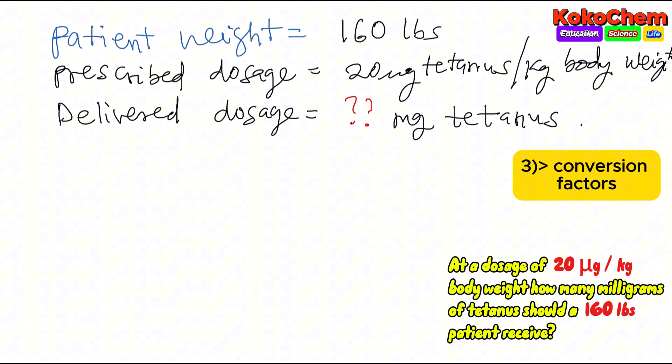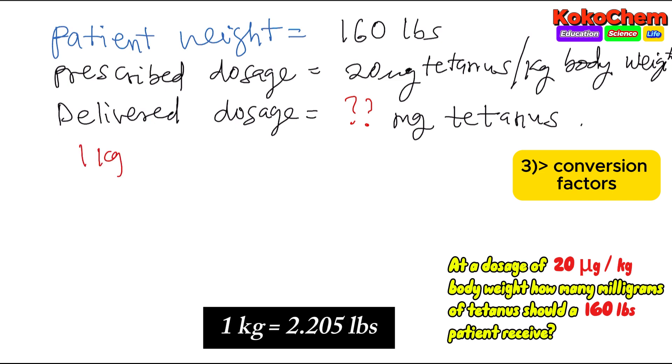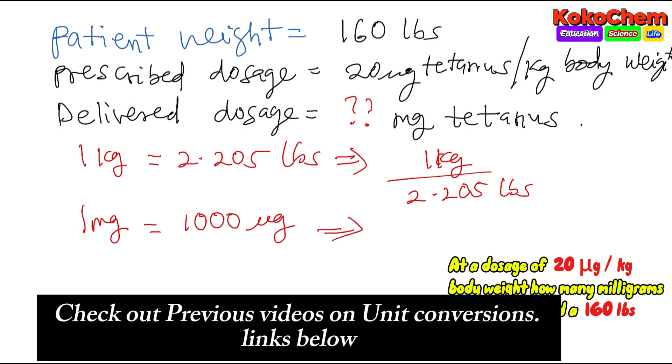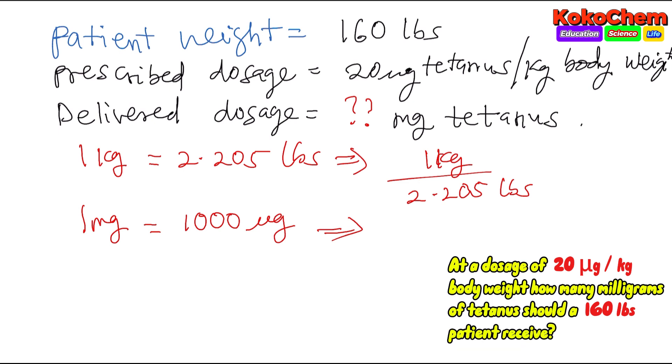Step three: identify your conversion factors. One kilogram equals 2.205 pounds. One milligram equals one thousand micrograms. Make sure you're checking my videos on unit conversion using the metric table system so you can do conversion effortlessly.